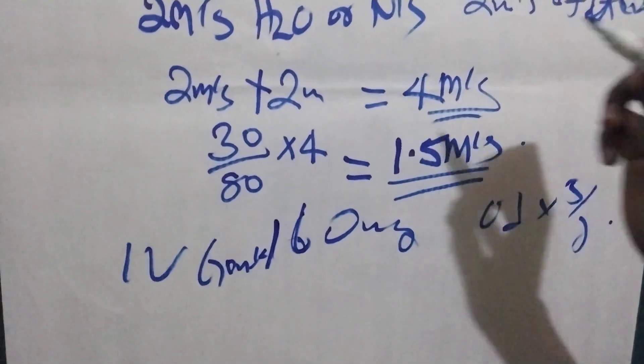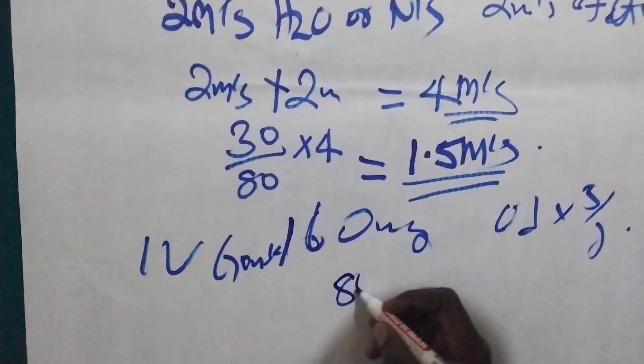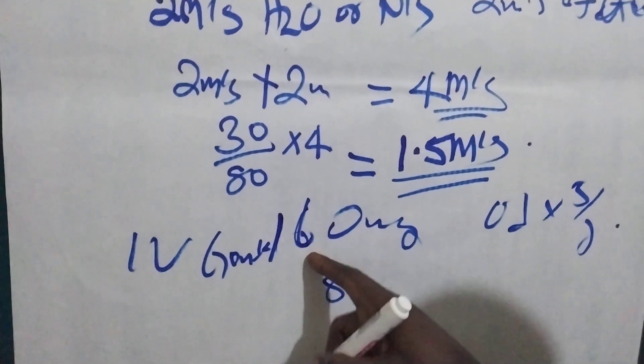Then we are going to calculate 160mg divided by 160